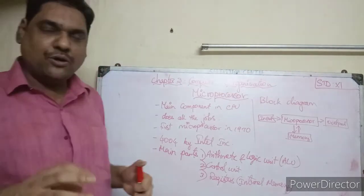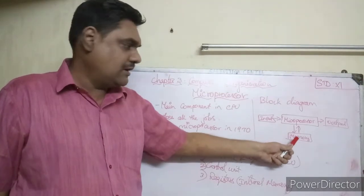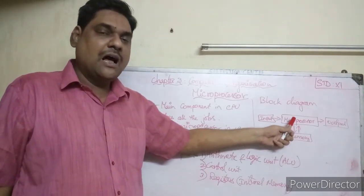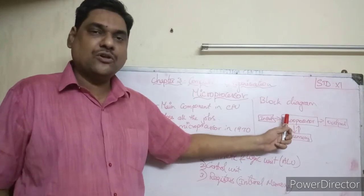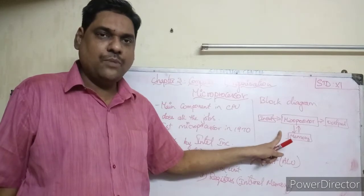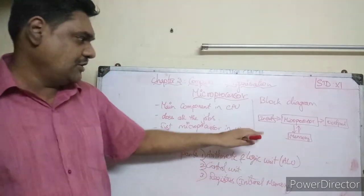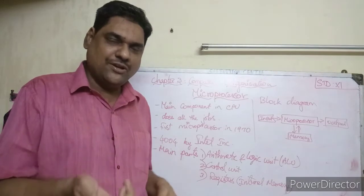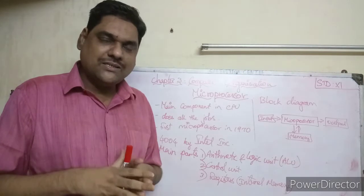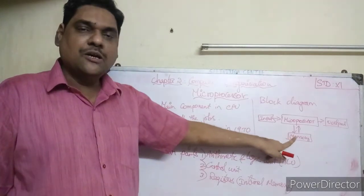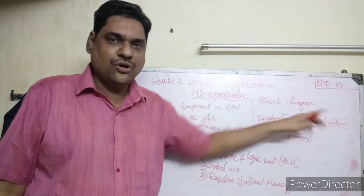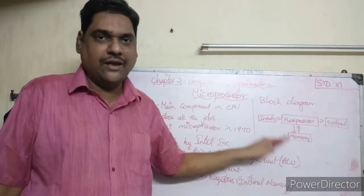The binary data is the input, and the instructions on how to calculate and process the data are stored in memory. The instructions are in the program in memory and the data is processed accordingly. To repeat: a microprocessor is a small silicon chip which accepts input as binary data, processes the data according to instructions already stored in memory, and produces the desired output.